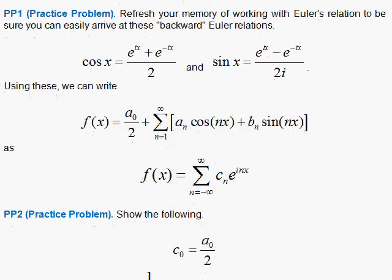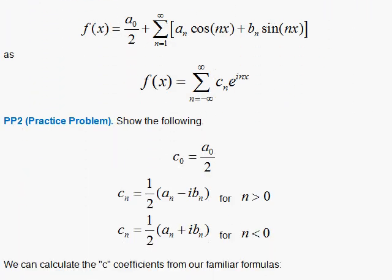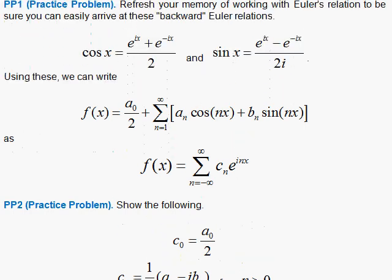So we start here with our Fourier series, and we're going to replace this using the Euler trick. For the cosine, we're going to introduce the sum of the exponentials divided by 2. That's going to go in here, so you'll have an n up here with the ix. And over here, we'll have e to the inx minus e to the minus inx divided by 2i. So I'm going to write this over all of n plus and minus, and it even includes 0. I'm going to convince you that this will work.